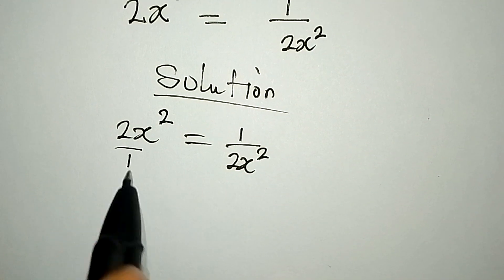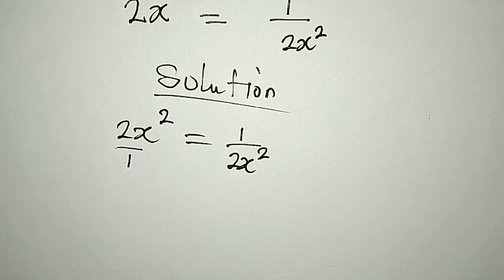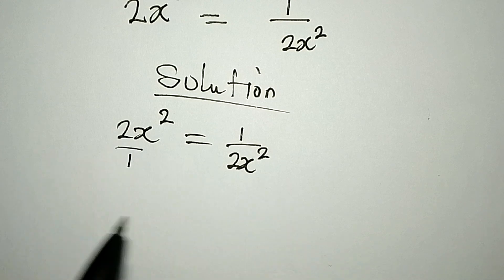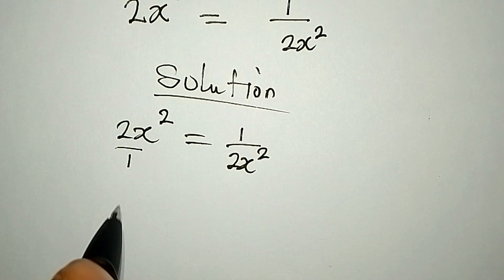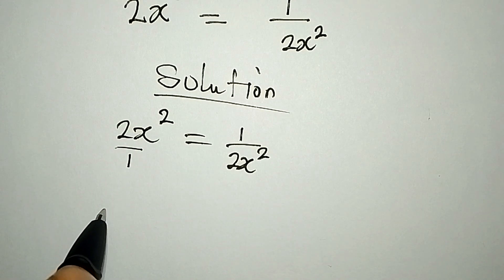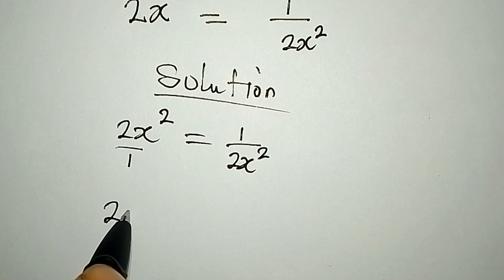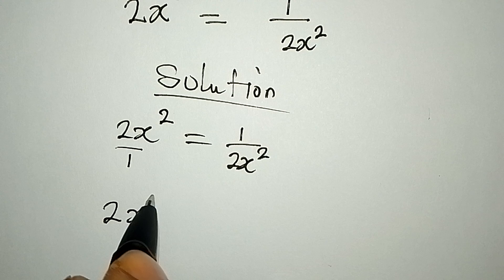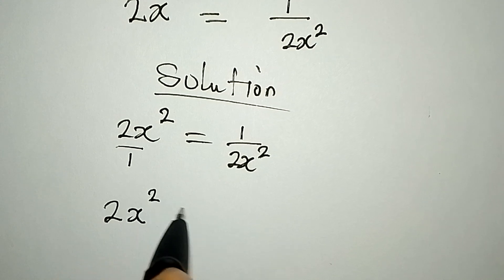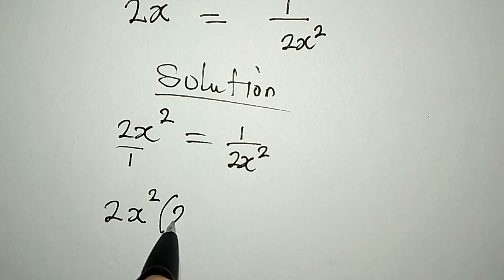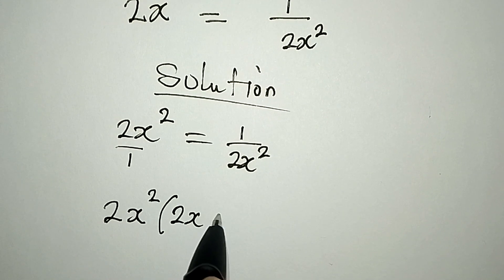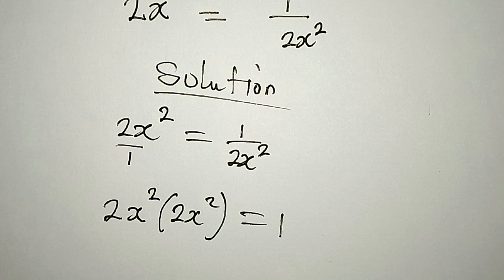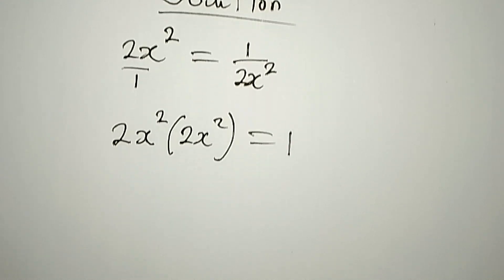Because we know that this is over 1 as well, so we have to cross multiply, and it will give us 2x squared multiplied by 2x squared, and this is equal to 1 times 1.